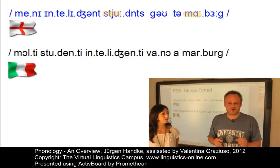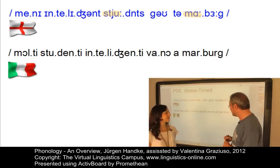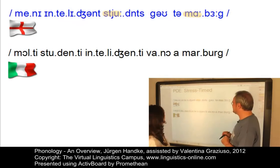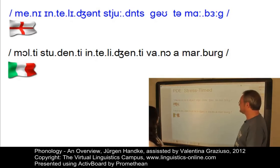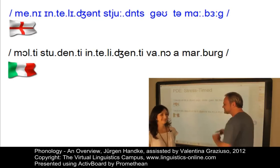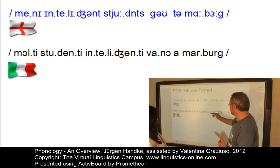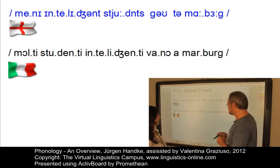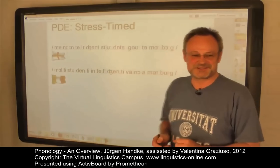This effect of almost equal syllable length explains why Italians often sound different when they speak English. Valentina illustrates this by reading 'Many intelligent students go to Marburg' with a strong Italian accent. Conversely, reading the Italian sentence 'Molti studenti intelligenti vanno a Marburg' with an English stress-timed accent sounds equally unusual — demonstrating how stress-timing and syllable-timing create noticeable cross-linguistic effects.